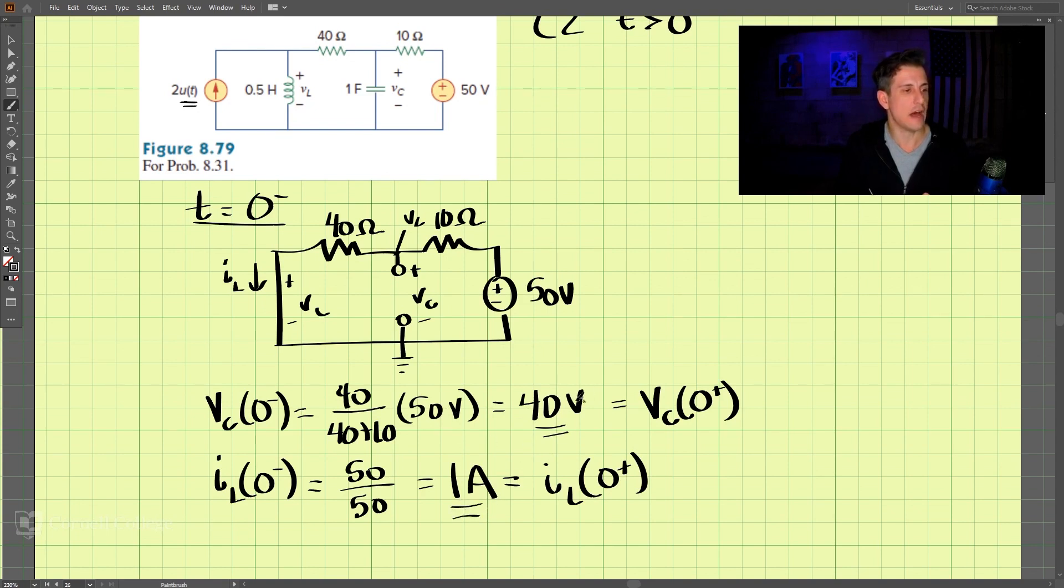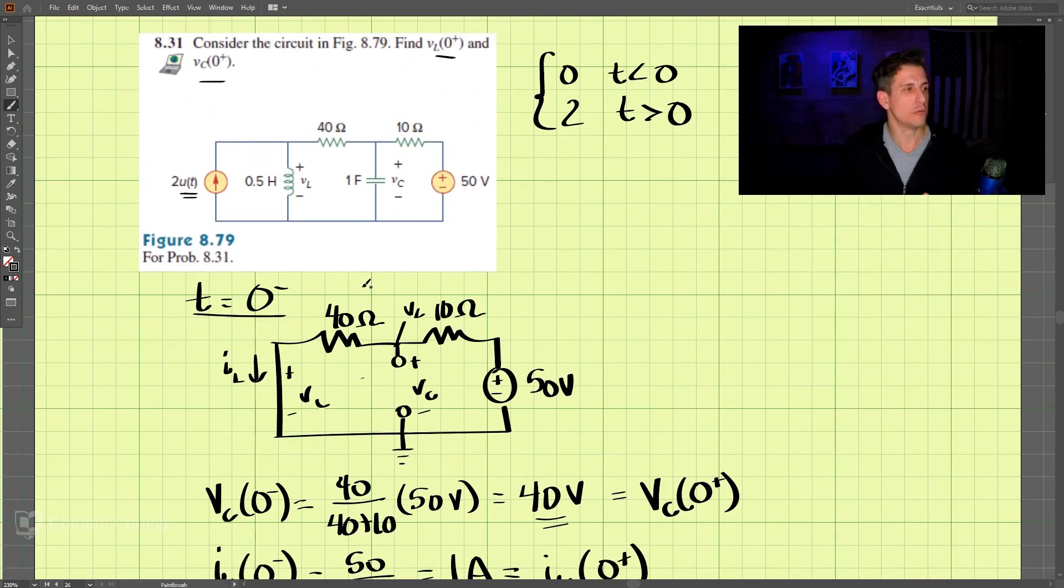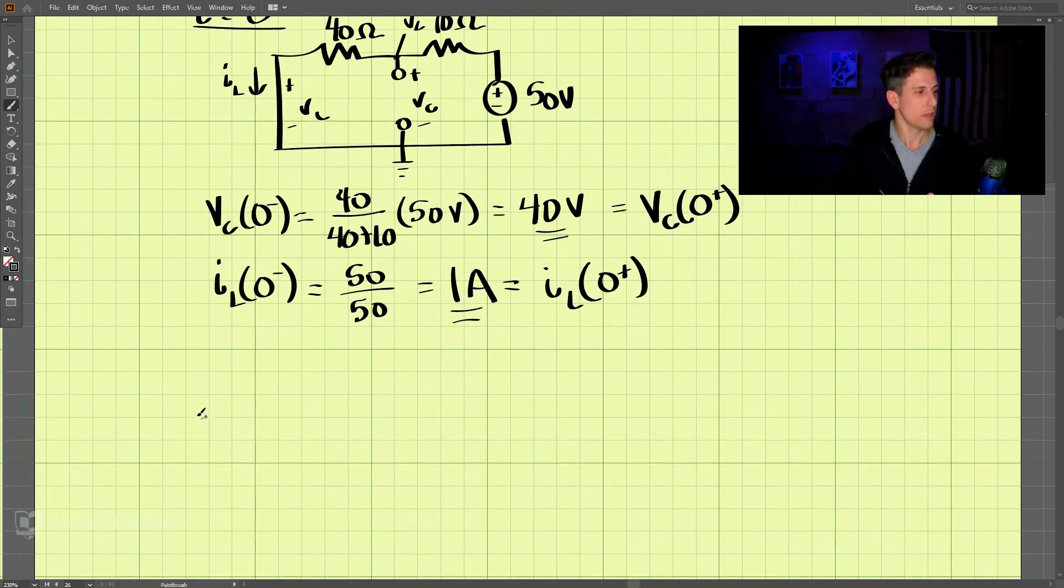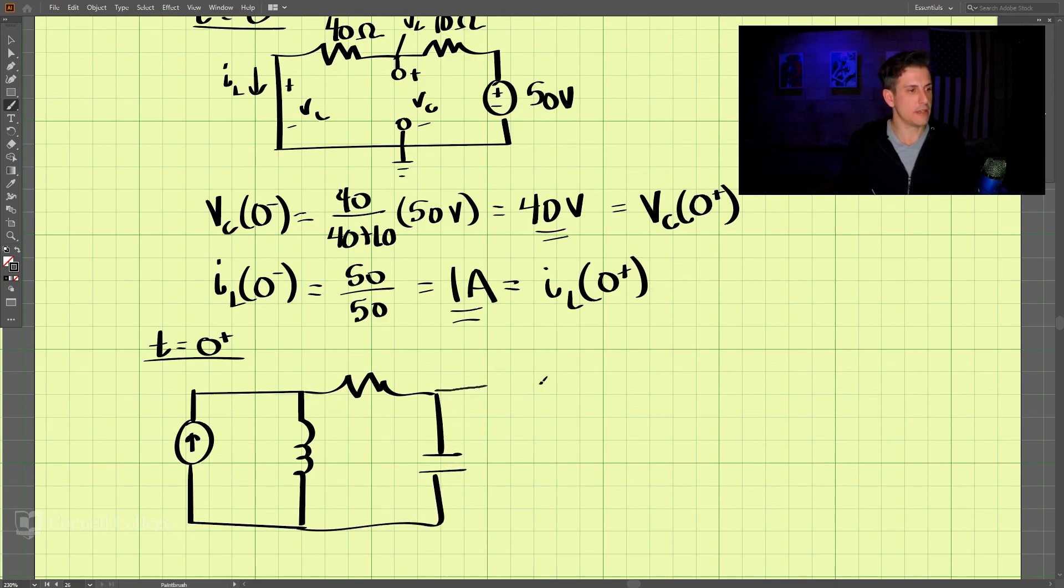Okay, so we have these two values here, and now let's go on to look at the time 0 plus. So at time equals 0 plus, we have a different circuit where the current source is now on. And then we have the inductor, and then we have the resistor, and capacitor, and lastly, our voltage source here, which is 50 volts.